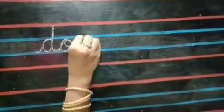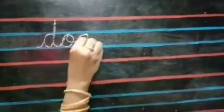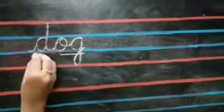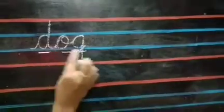You all know dog is a domestic animal. D, O, G. OG is a two-letter cluster. D, og — dog.